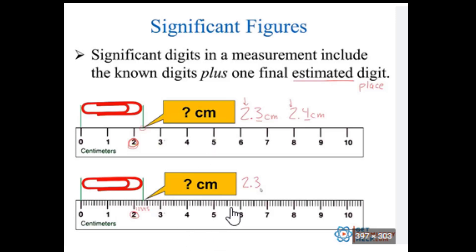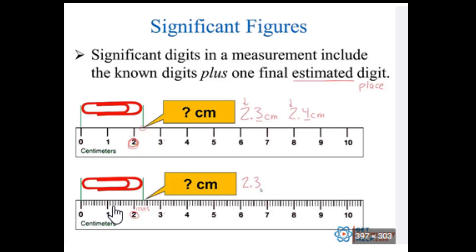Now let's say we're using this other ruler. What can we be certain to with this measurement? Not just to the whole number — if we look at each of these markings and count how many there are between zero and one, there are 10. So I can be exact to the tenths of a centimeter. That means I would estimate one digit past the tenths, which would be a hundredth of a centimeter.